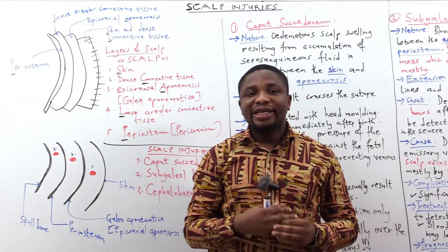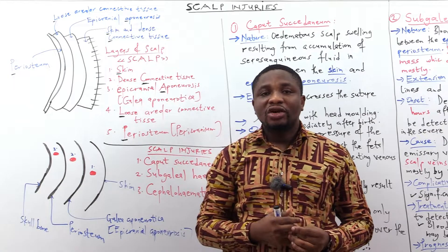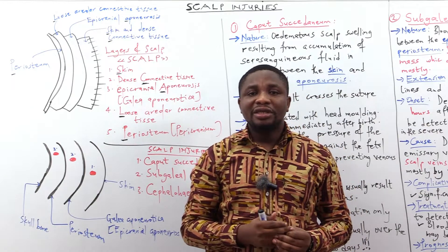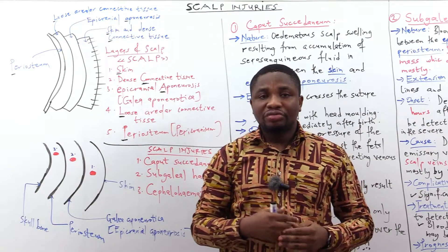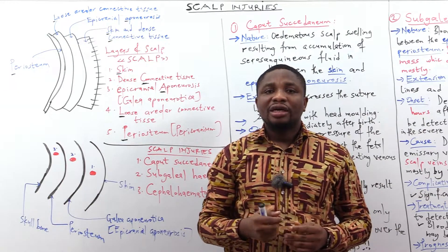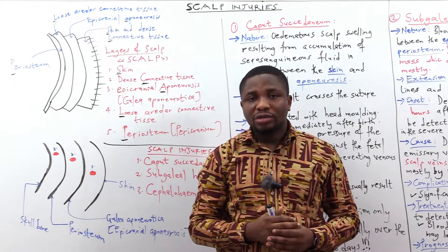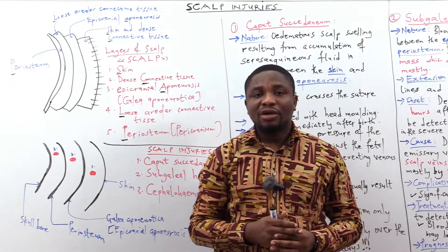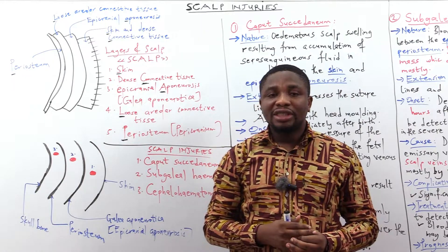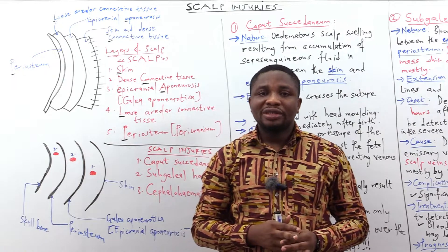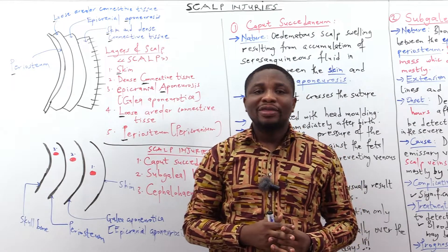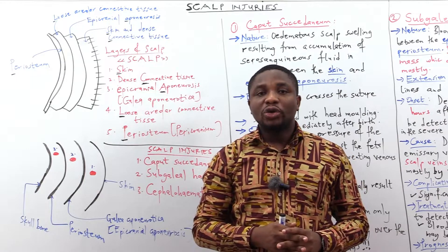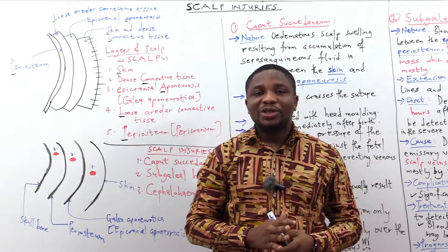By then, when the nose is being suctioned, there will be nothing left in the oropharynx when the baby is stimulated to breathe through the suctioning of the nose. This helps to prevent aspiration of foreign bodies in the oropharynx, and that explains why it is advisable to suction the mouth first before the nose during neonatal resuscitation.